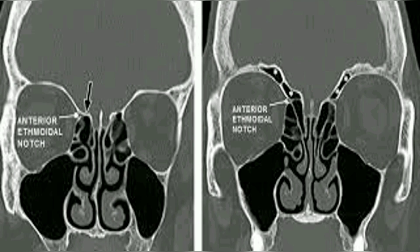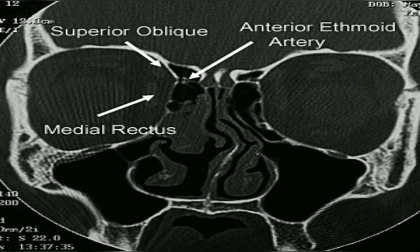In the image on the left, there is the presence of an anterior ethmoidal notch in an individual in whom the supraorbital ethmoidal cells are not present. On the right, the same anterior ethmoidal notch is seen in an individual with supraorbital ethmoidal air cells. This image demonstrates the nipple or pyramid sign, showing an invagination of the lamina papyracea between the superior oblique and the medial rectus muscles, pointing to the anterior ethmoidal artery.